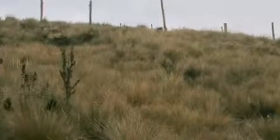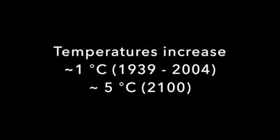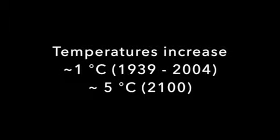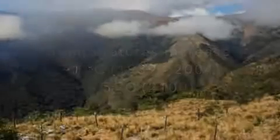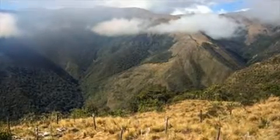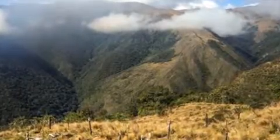In addition to the human-induced modifications, climate change is altering the composition and functioning of those ecosystems. The mean annual temperature increased by almost 1 degree Celsius from 1939 to 2004, and projections are estimating increases of 4 to 5.5 degrees Celsius by the end of the century.